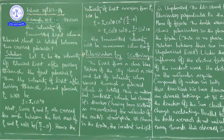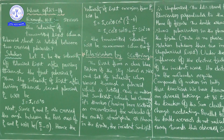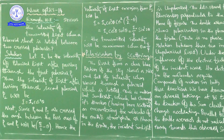In continuation to the last class, in this class we are going to discuss one example problem — example 10.8, based on Malus's Law: I equals I₀ cos squared theta. Afterwards, in continuation to that, we are going to discuss polarization by scattering.